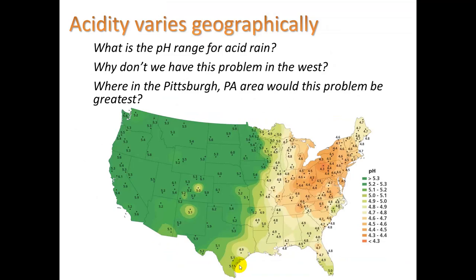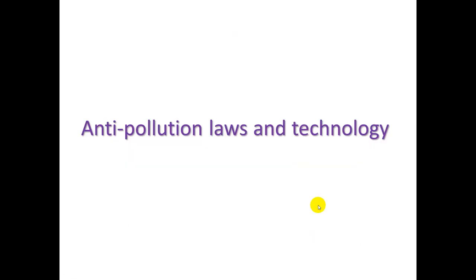Acid rain acidity varies geographically. There is very little problem in California and most of the western U.S., but in the east, where coal is burned much more, it's a significant problem. However, it is becoming less of a problem as smokestack cleaning technology improves and less sulfur is emitted.